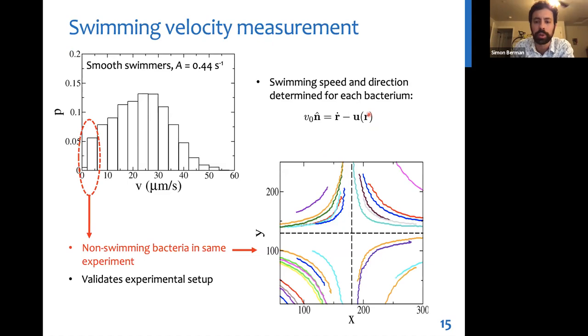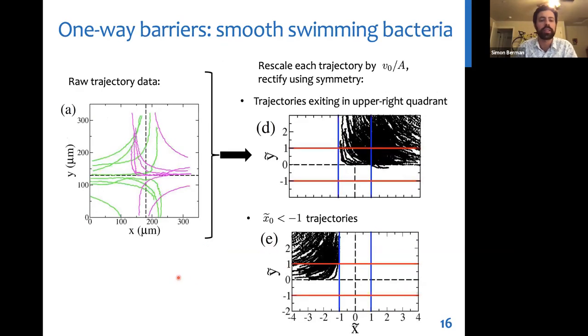So we were able to extract both the swimming speed and direction of the bacteria from the particle tracks simply by subtracting off the known fluid velocity from the measured particle velocity. And this gives us a distribution of swimming speeds. Just to validate our experimental setup, we looked at the trajectories of the very low speed swimmers, whose motion can't be distinguished from just a noisy particle without swimming. And these are the trajectories we get. So we see the typical hyperbolic flow trajectories for passive particles as expected. And so this validates our experimental setup, namely this assumption that the bacteria in the flow don't influence the fluid flow.